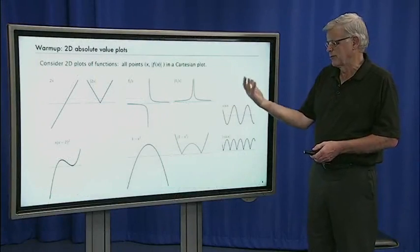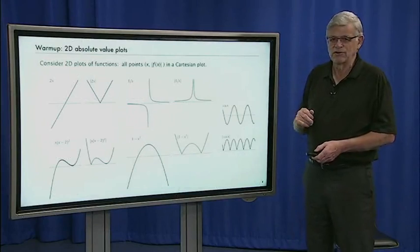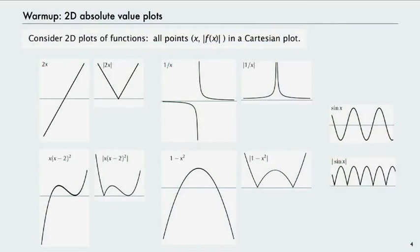But the absolute value of 1 minus x squared starts to look a bit like Batman. And as we get to more complicated functions, we get more interesting shapes — so this is a cubic, for example. I bring these up in two dimensions so that the shapes we see in three dimensions are not quite so jarring and can be interpreted in terms of shapes like this.